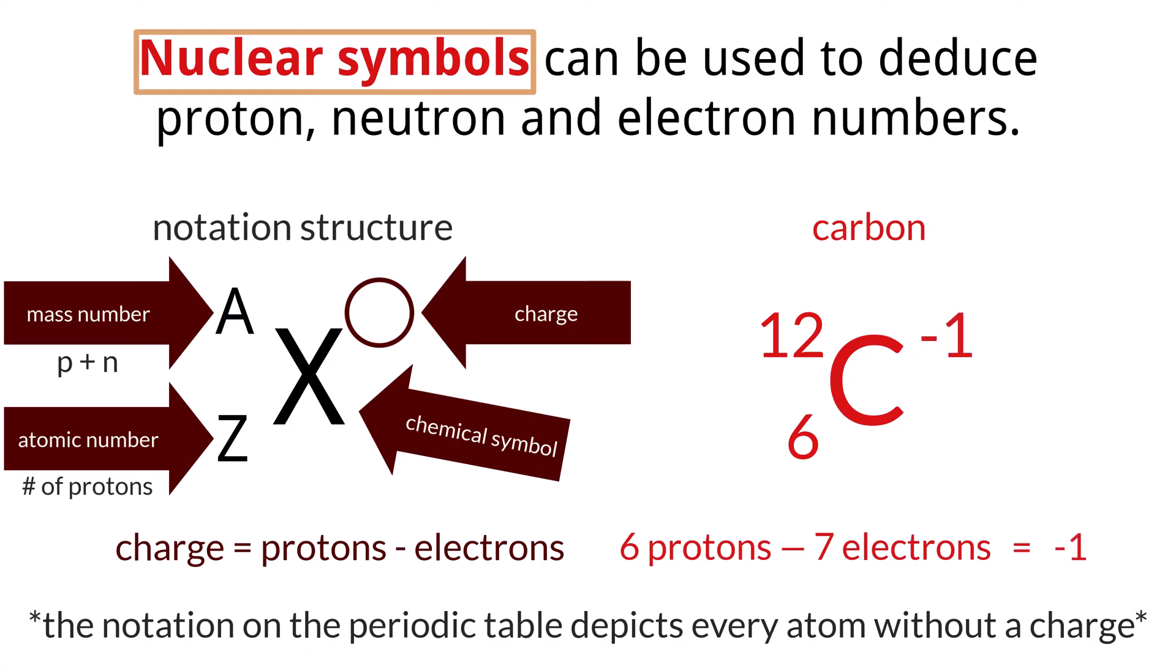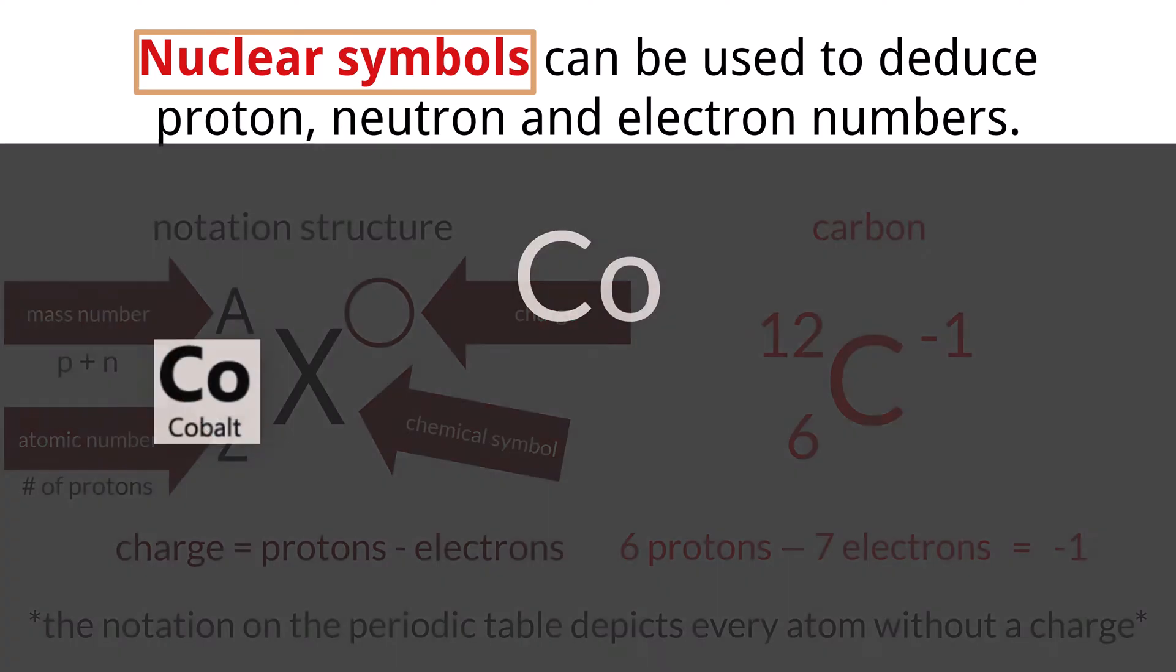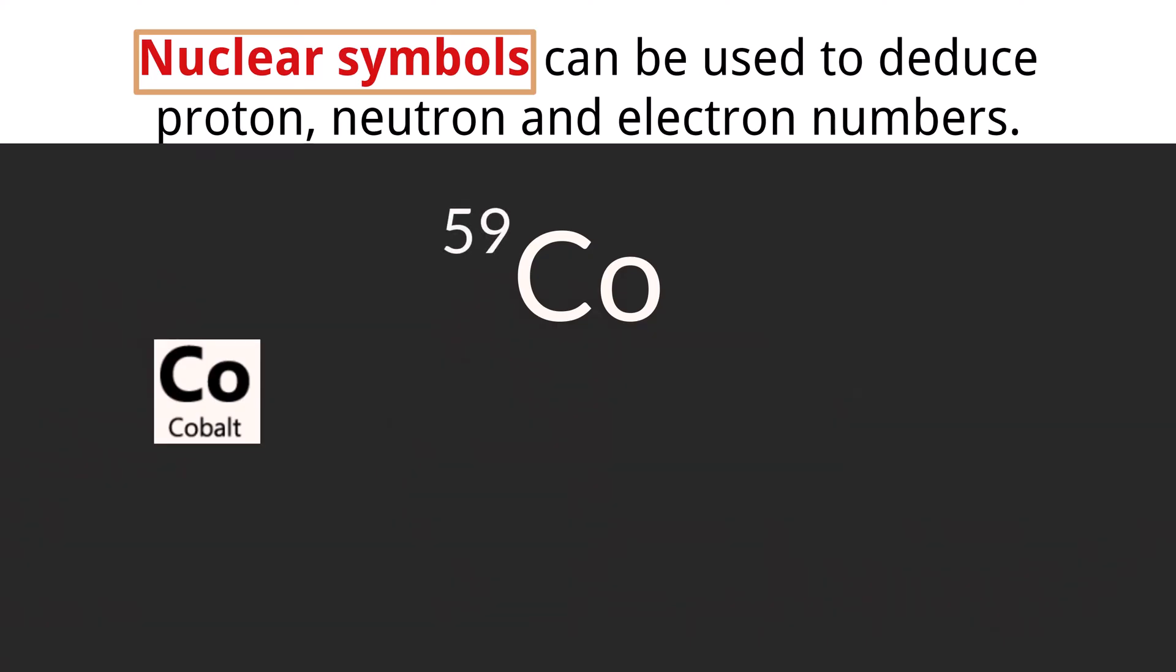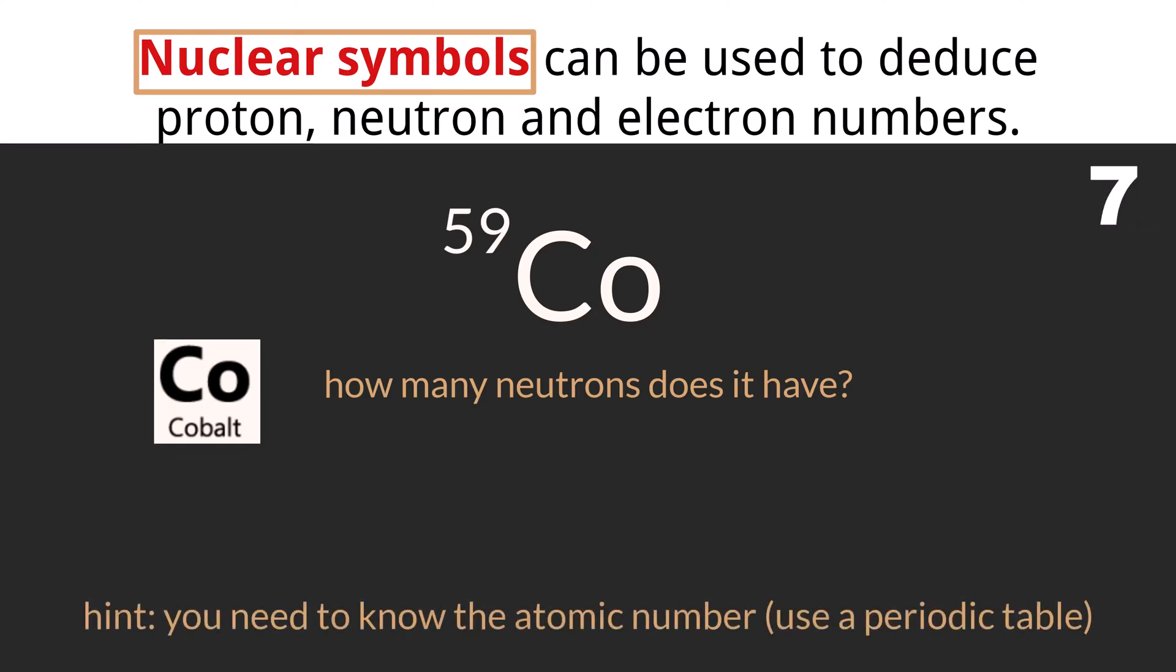This type of notation allows us to determine the values of some numbers if we know the others. For example, if we have a cobalt atom that has a mass number of 59 amu, how many neutrons does it have? Take a second and pause the video to see if you can figure it out. We know from the periodic table that cobalt has an atomic number of 27, meaning it has 27 protons. With a mass number of 59, we can subtract 27 protons from the total mass of 59 to get a total number of neutrons in the atom, which is 32. Be prepared to answer questions like this on the IB exam.